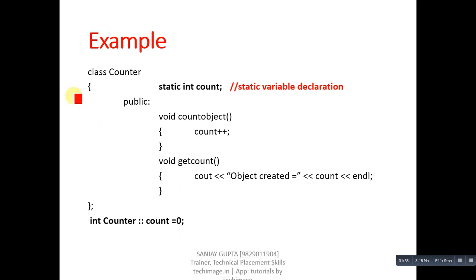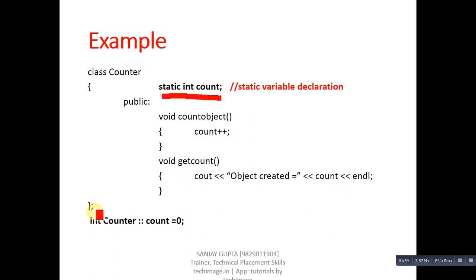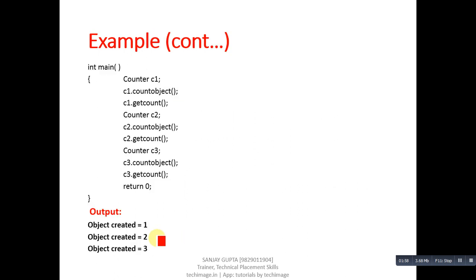To understand the concept of a static variable, consider this example. In class Counter, a static variable count is declared. It is incremented by one in the countObject function, and the value of count is displayed in the getCount function. After the class definition, the count variable is initialized to zero. In the main function, three objects are created: c1, c2, and c3, and all these objects call countObject and getCount functions.